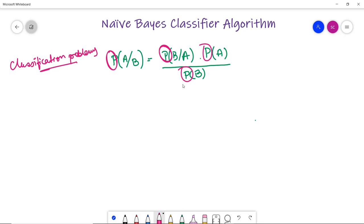Now what is Bayes' Theorem? Bayes' Theorem, also known as Bayes' Rule or Bayes' Law, is used to determine the probability of a hypothesis based on prior knowledge. It depends on conditional probability.